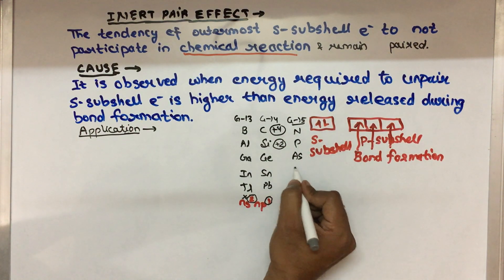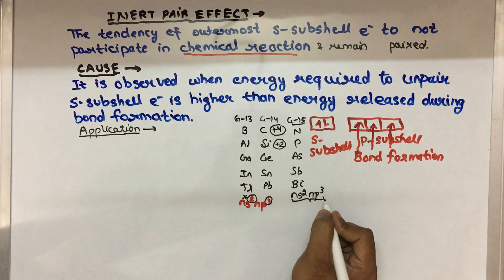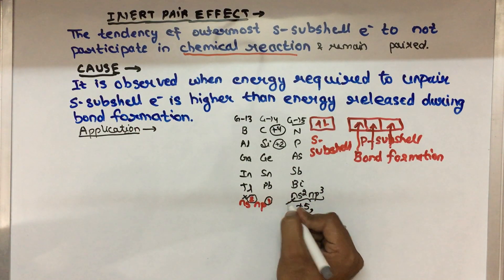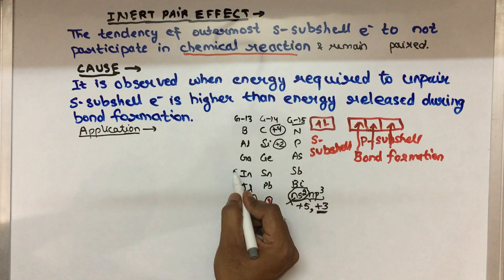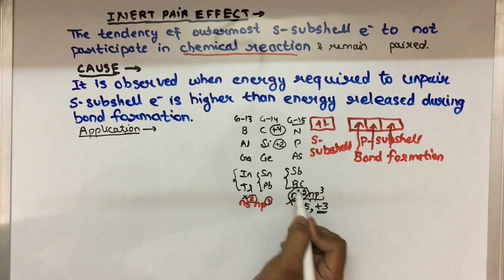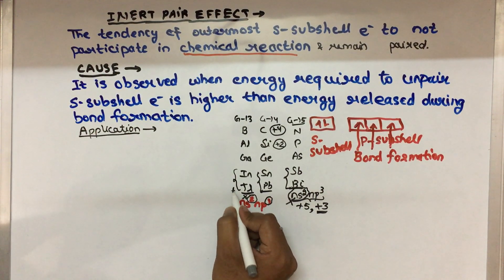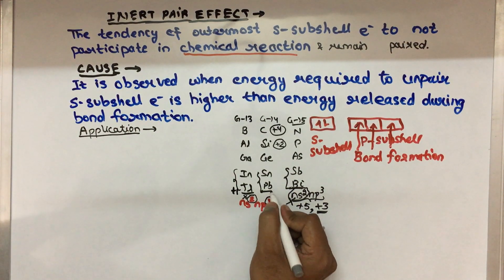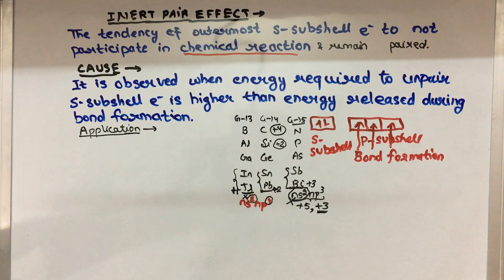Similarly, group 15 elements — nitrogen, phosphorus, arsenic, antimony, bismuth. The inert pair effect is very dominant in heavier elements: in group 13, the +1 oxidation state is stable in thallium; in group 14, the +2 oxidation state is stable in lead; and in group 15, the +3 oxidation state is most stable in bismuth.